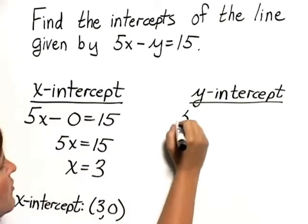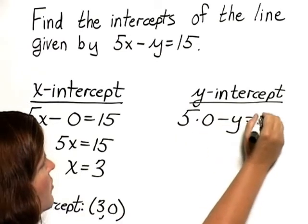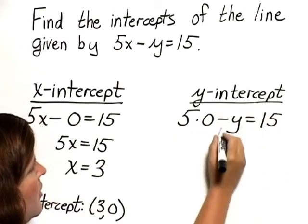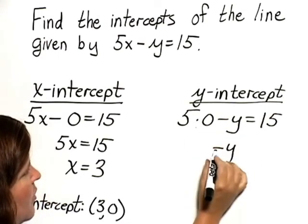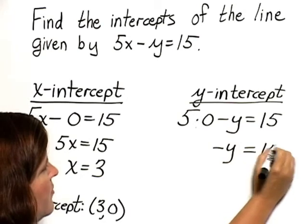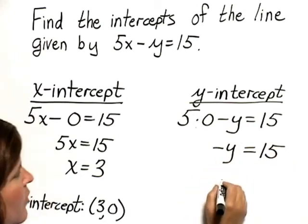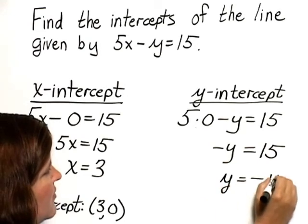So we substitute 0 for x. We have 5 times 0 minus y equals 15, or the opposite of y. Since this is 0, we have negative y equals 15. Multiplying both sides by negative 1 gives us y equals negative 15.